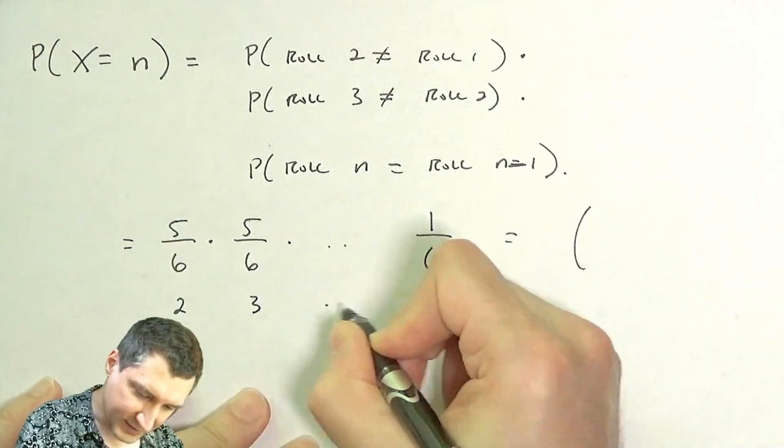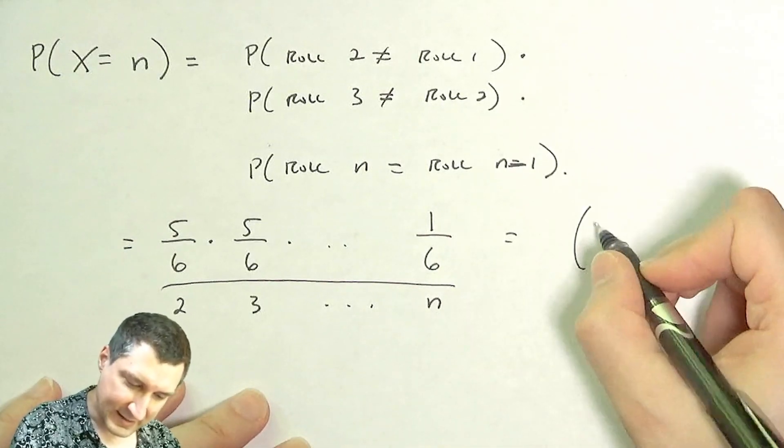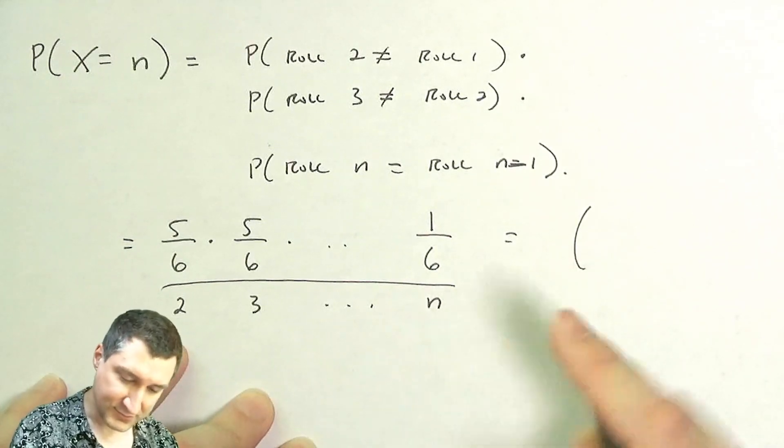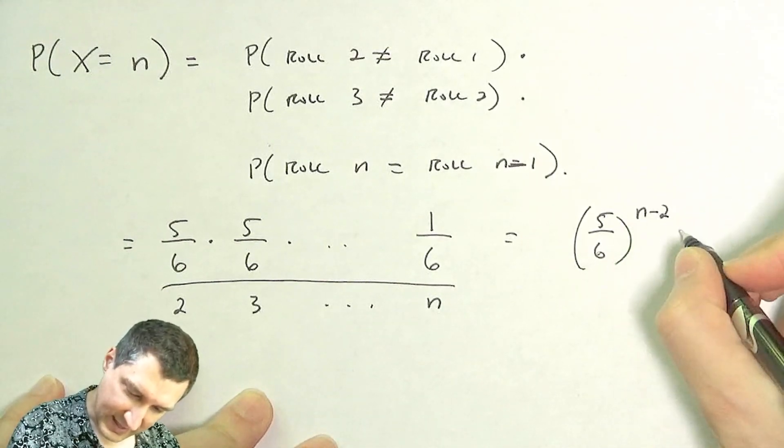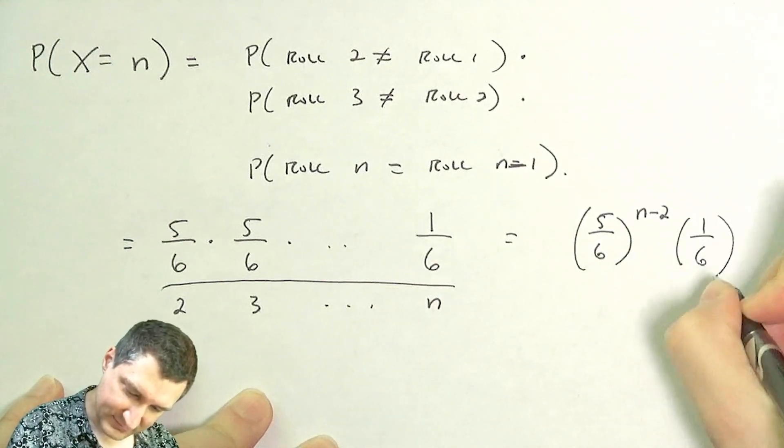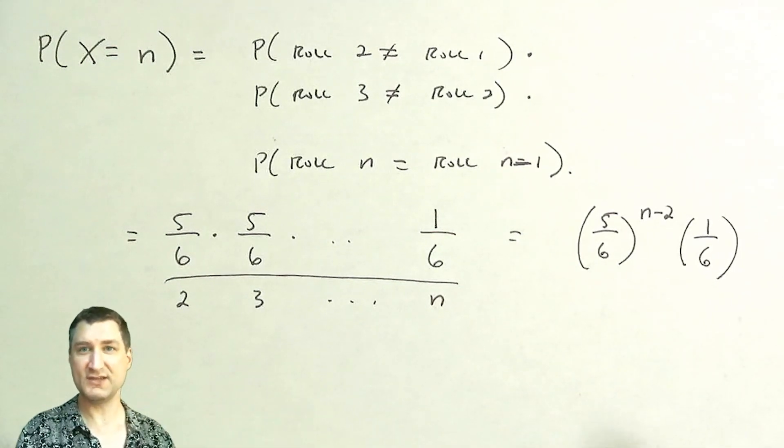Here this is like saying I have roll 2, roll 3, dot dot dot, all the way over to roll n. So I have n minus 2 failures and one success.